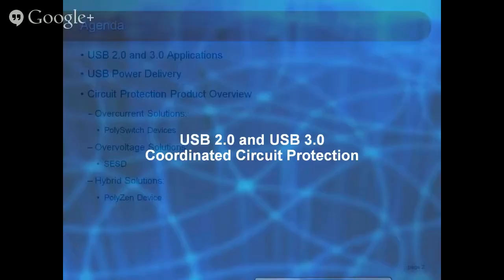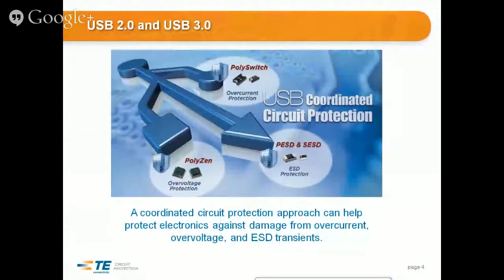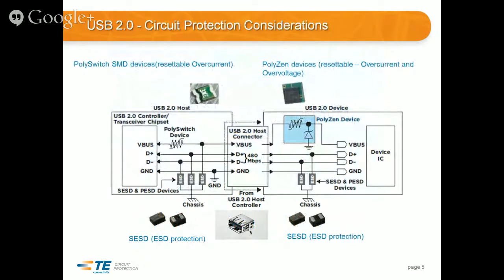This slide shows the products for USB 2 and 3: PolySwitch devices, ESD protection, and as everybody transitions from USB 2 to USB 3 there are higher data rates and other things to consider. USB 2 uses D+ and D− — the two data lines — plus the V-bus power and ground, so just four wires. On the left we're showing our PolySwitch device for over-current protection.